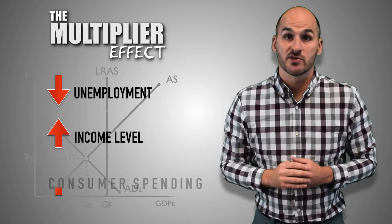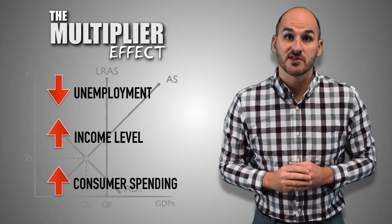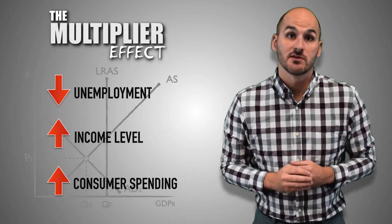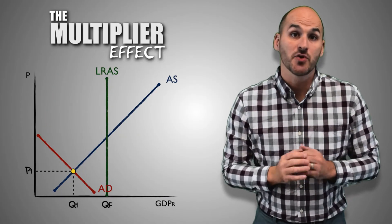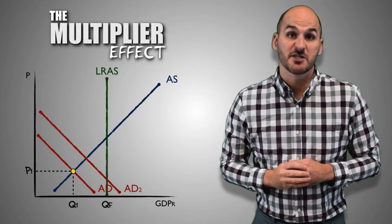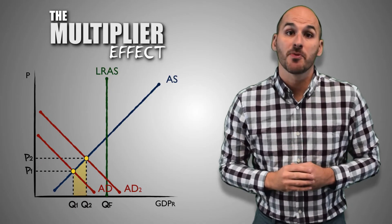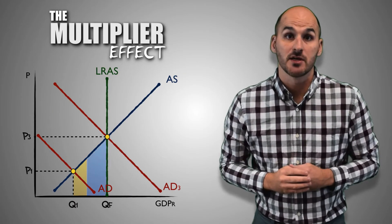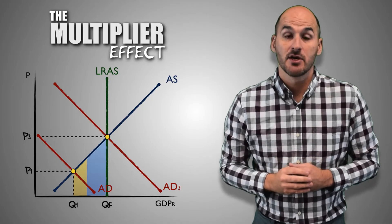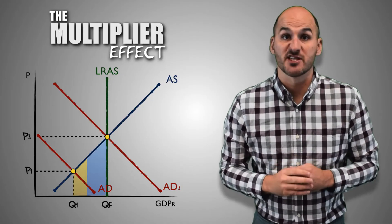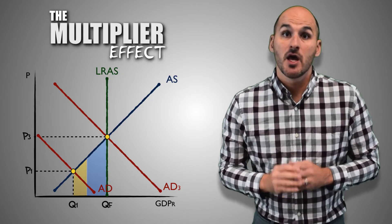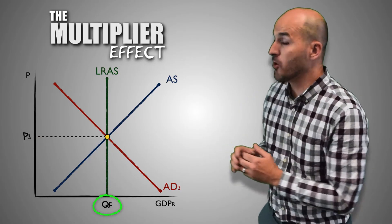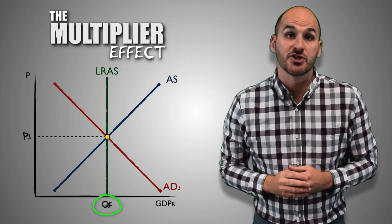With rising income levels, consumer spending increases, driving aggregate demand to higher levels. In the end, the initial increase in government expenditures, combined with the multiplier effect of consumer spending set off by that policy, boosted aggregate demand, slashed the unemployment rate to 4-6%, increased the standard of living, and returned the economy to its full employment level of real GDP output.